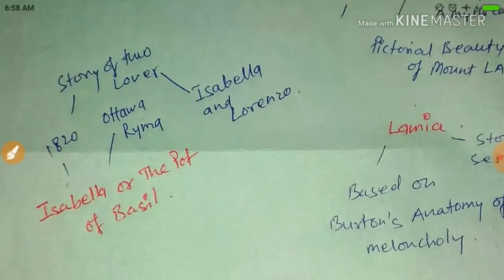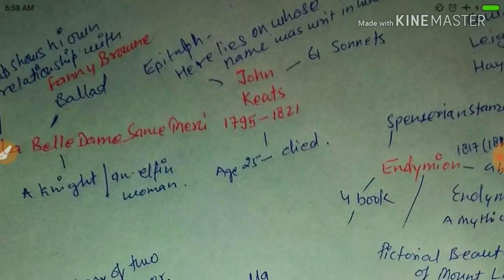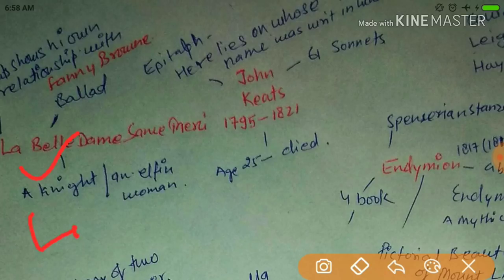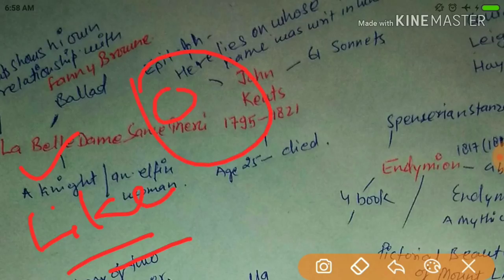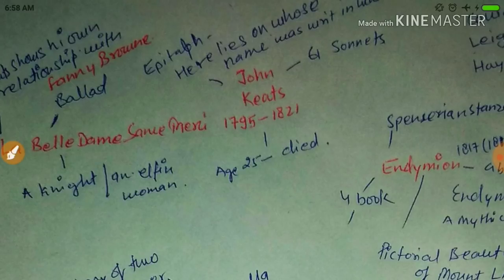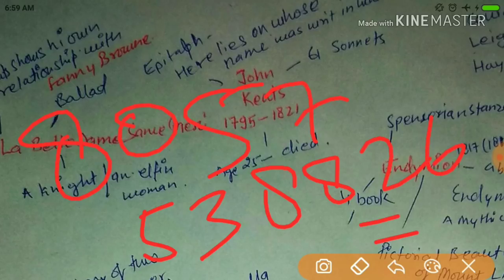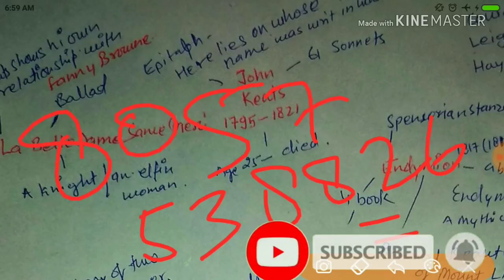So here are the works covered: Lamia, Isabella or the Pot of Basil, Endymion, La Belle Dame Sans Merci, and about his life. If you liked the video, please write a comment and hit the like button. Please subscribe to my new channel where I'll be uploading new videos. Good luck for exams!